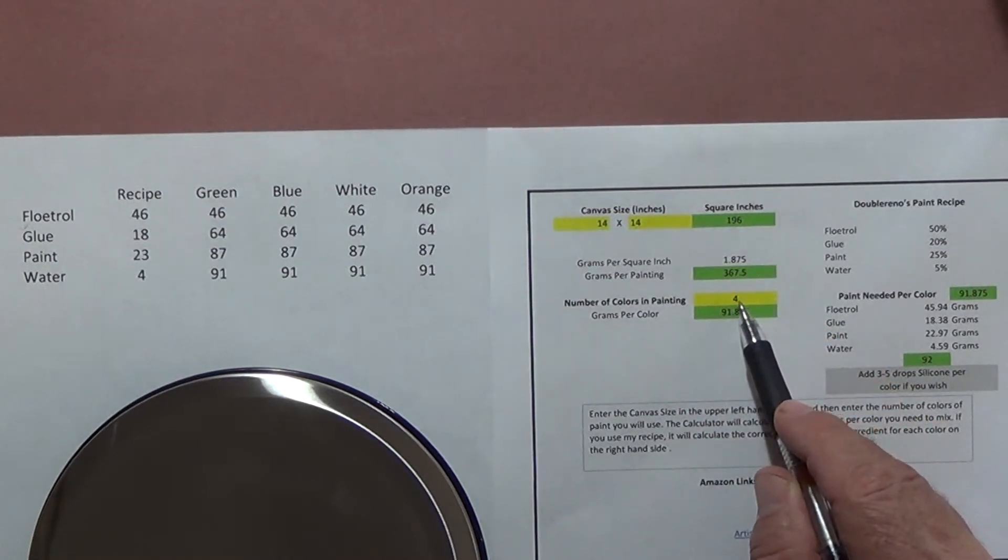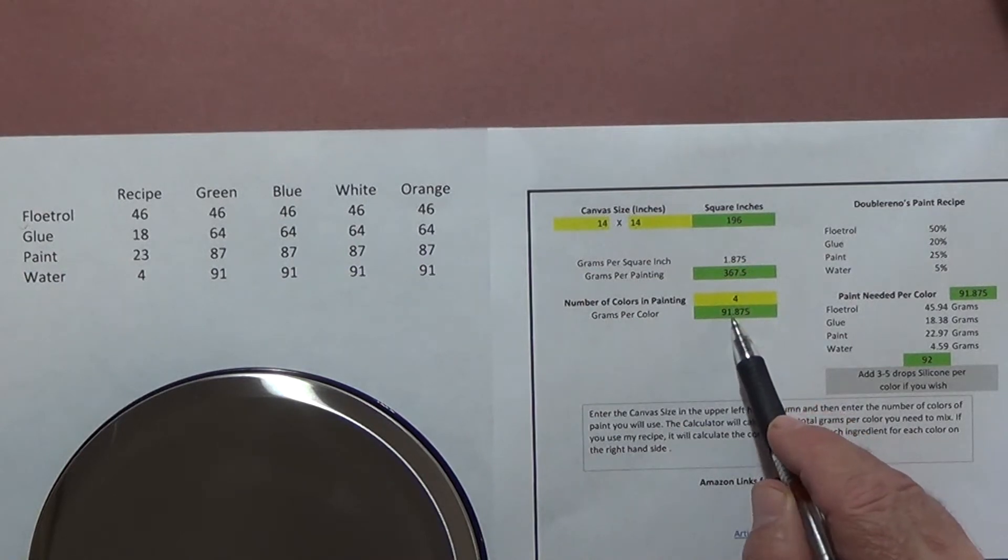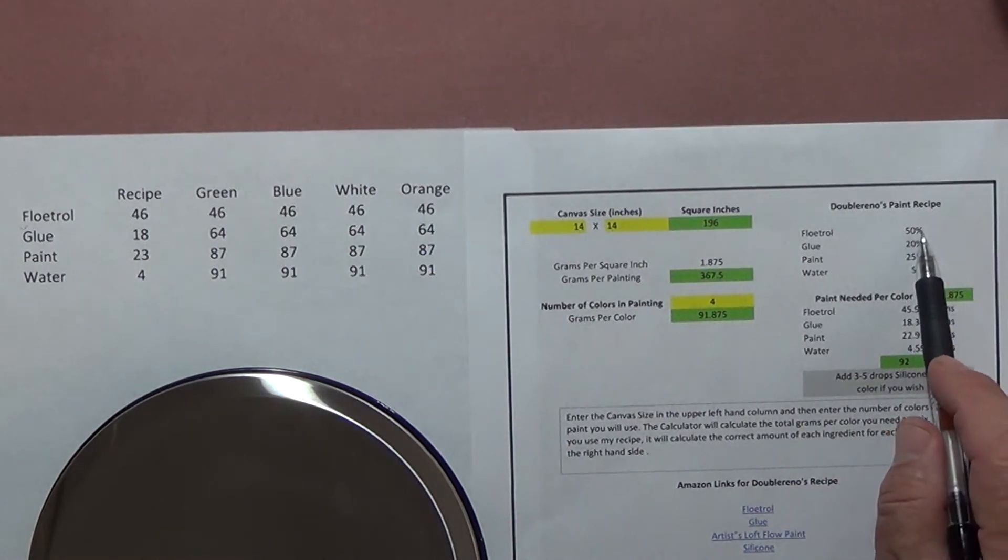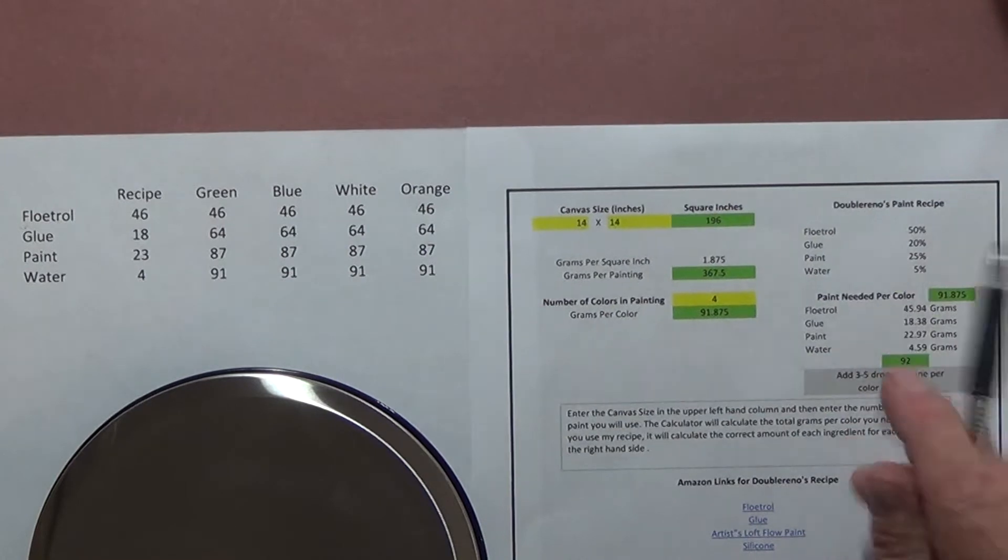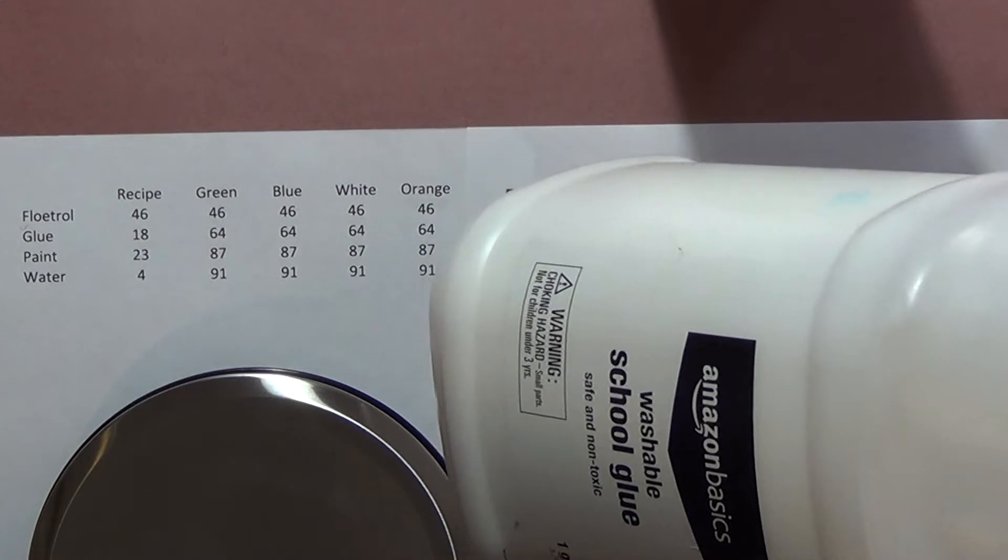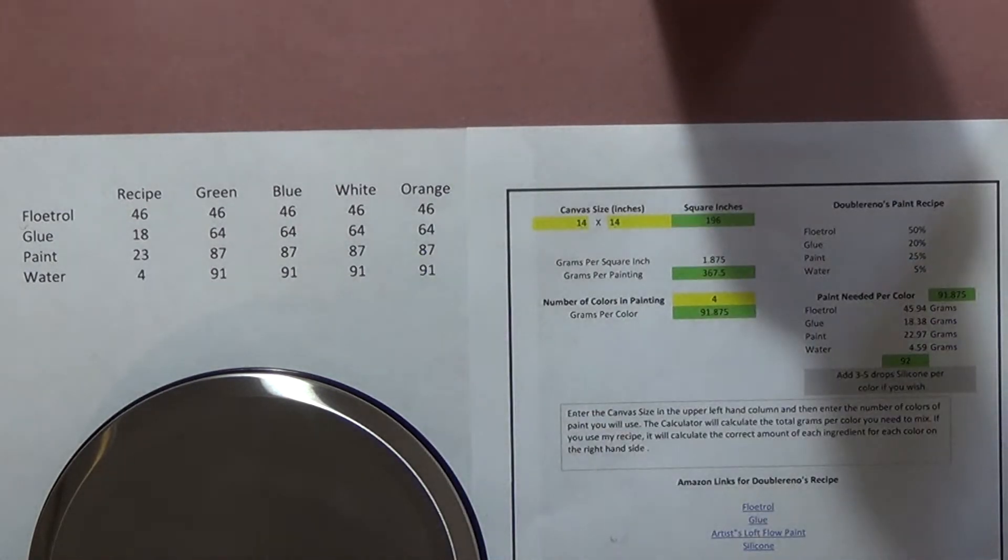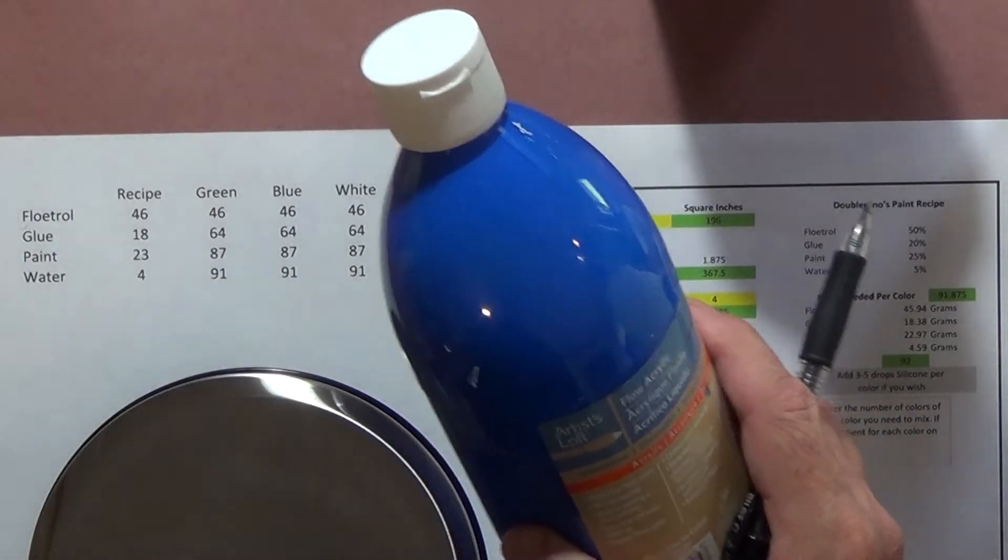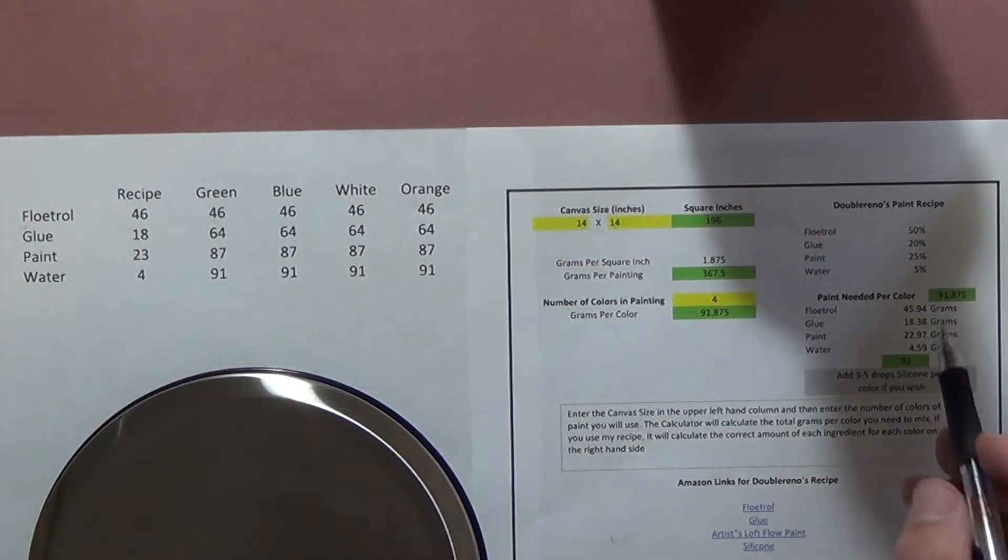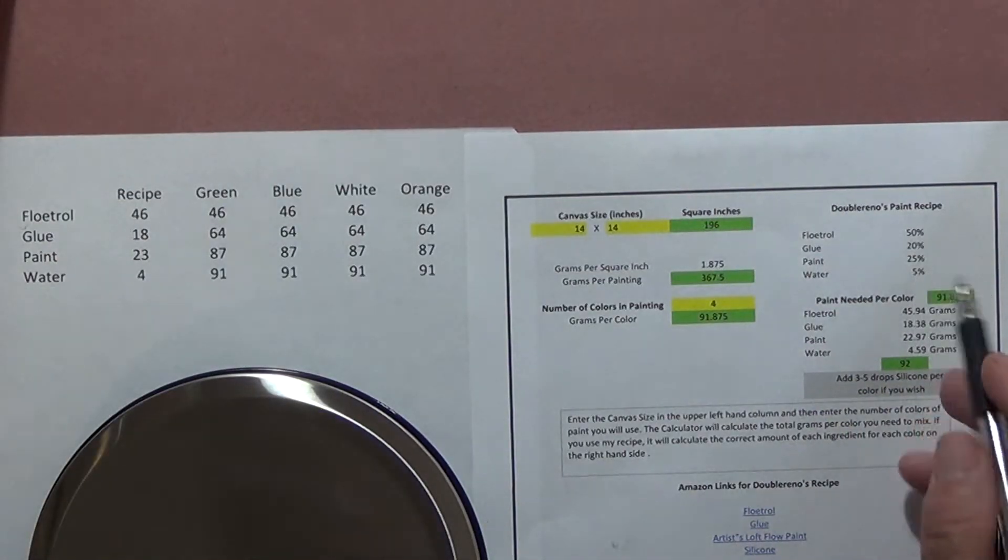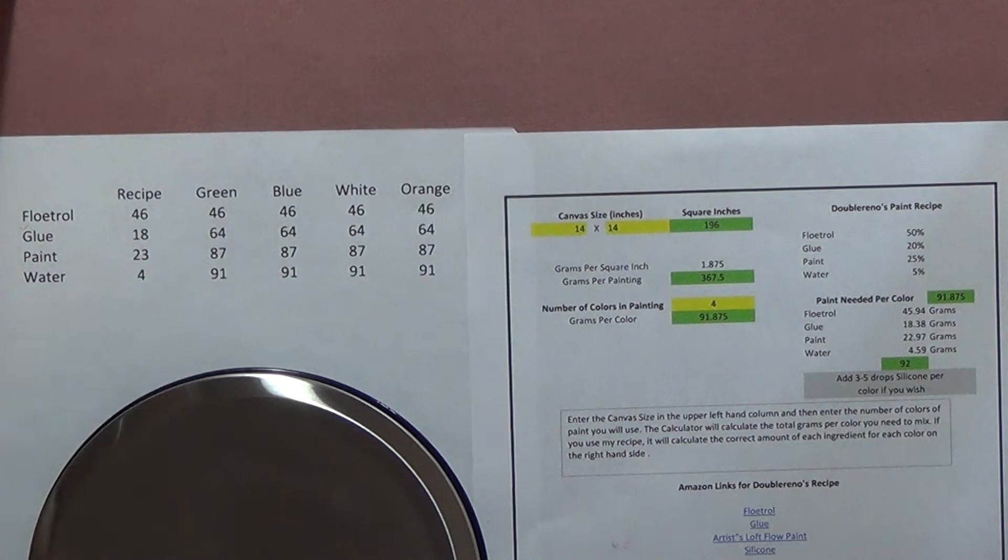It figures up per square inch how many grams of paint you need. For this particular one I'm mixing four colors, so I need 91.87 grams of paint per color. My recipe is roughly 50% Floetrol, 50% glue—I just use this Amazon Basics glue, and I've got links to all this stuff down in my description too—and then the paint. This particular one I'm using the Artist Loft Flow Acrylics, so 25% paint, and then I use 5% water. I just got a little bottle with purified water in it.